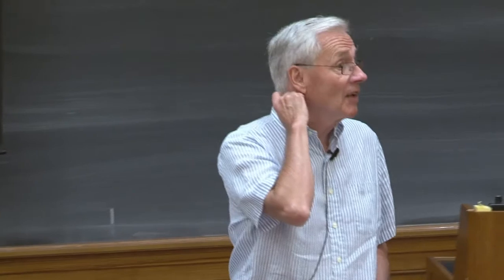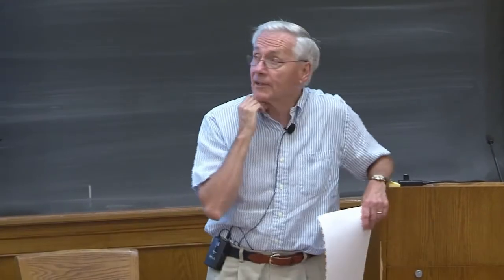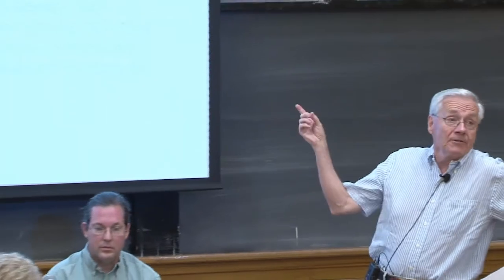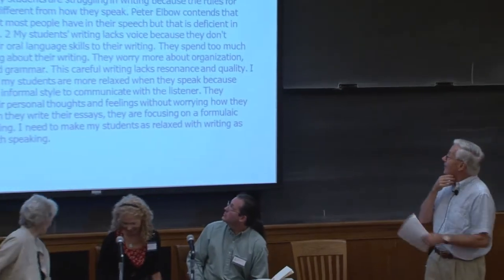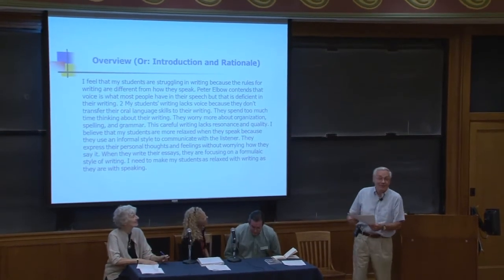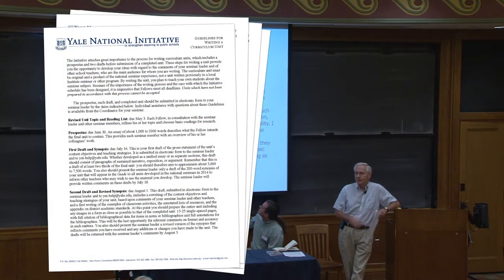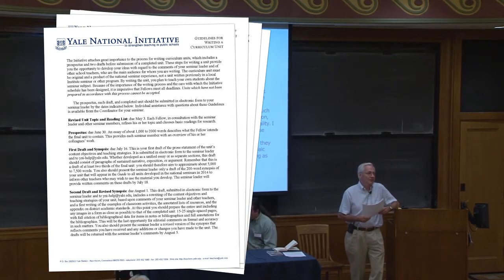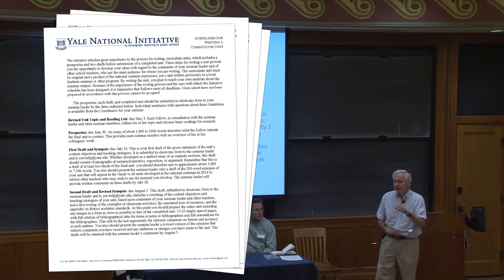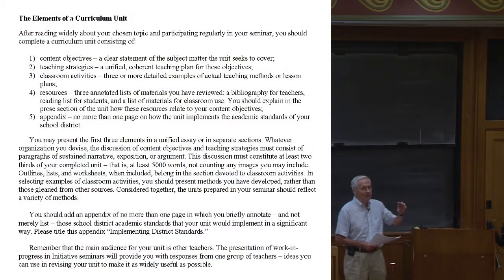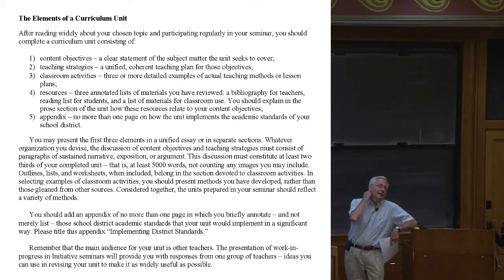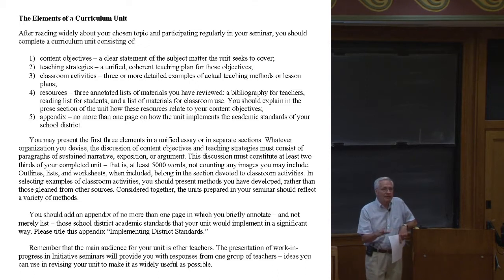Now the ordeal begins. I'm going to comment only briefly on these passages as they flash before you. On page two of the document in your brochure, you find outlined the parts or sections of the curriculum unit. They're called content objectives, teaching strategies, classroom activities, and an appendix. And lists of resources — lists of resources being books for teachers, reading materials for teachers, for students, and in some cases materials appropriate for use in the classroom, which I think applies primarily to seminars in science.